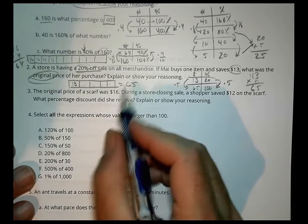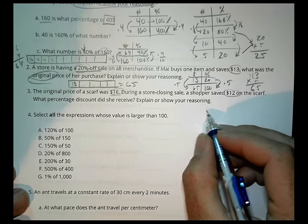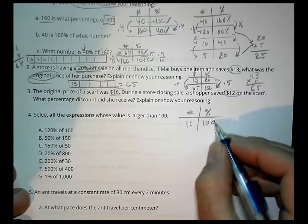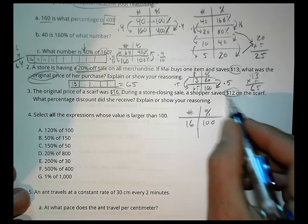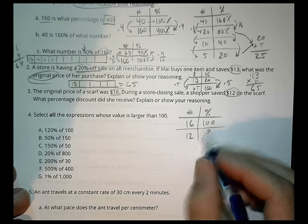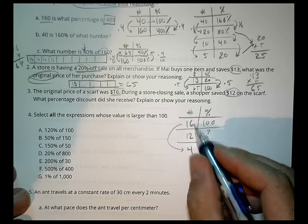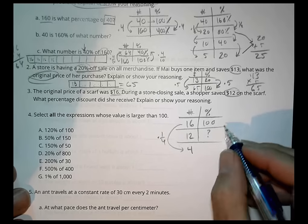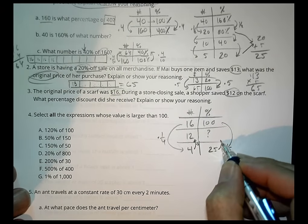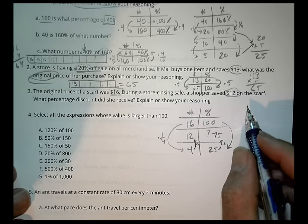Number 3. The original price of the scarf was $16. During a store closing sale, a shopper saved $12 on the scarf. What percentage discount did she receive? If we go back to kind of a table. We have our number and our percent. We know that $16 was the original price and that's 100%. If a shopper saved $12, the question is if I save $12, what percentage is that? I can't quite get to 12 from 16, but I could definitely get 16 to 4. To go 16 to 4, I'm multiplying by 1 fourth. So 4 is 25%. Now, to go from 4 to 12, that's times 3. And 25 times 3 is 75. So we would say 75%.